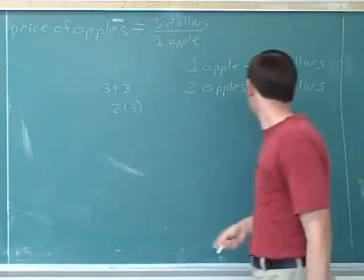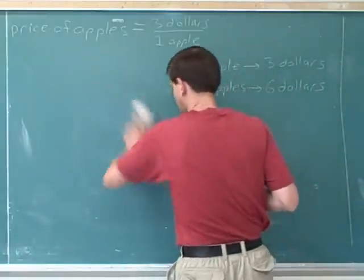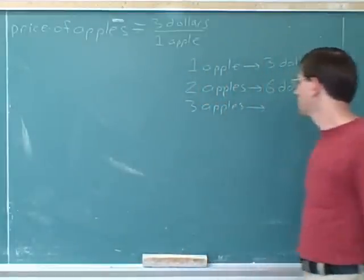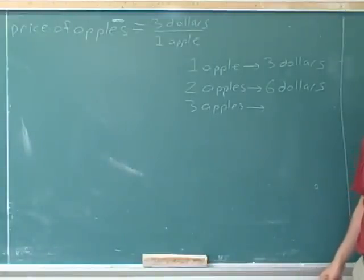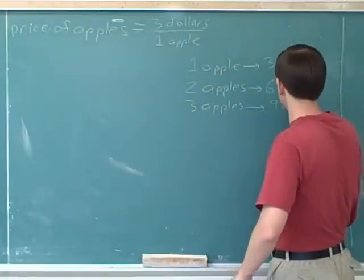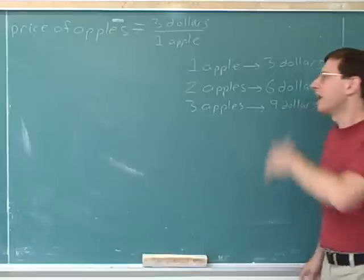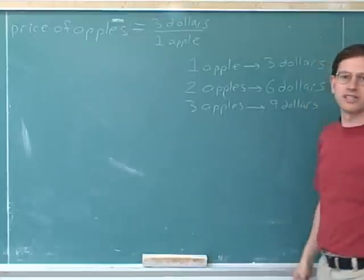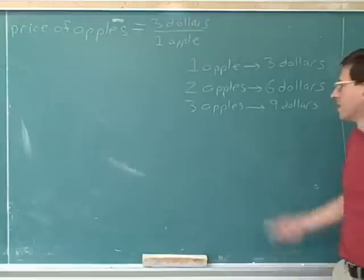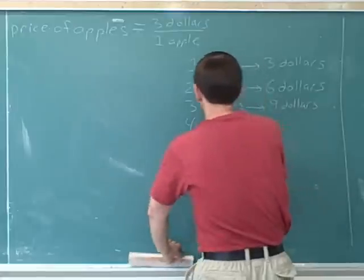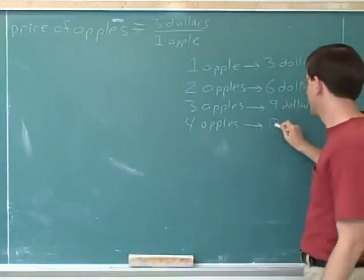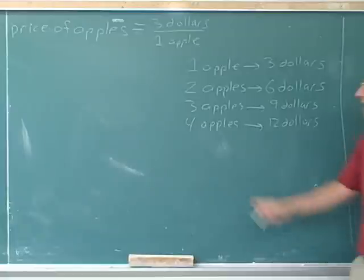Or let's say you decide to buy three apples — how much would that cost? We know two apples would cost six dollars, and one more apple is another three dollars, so that would be nine dollars total. Or you could use multiplication: since each apple costs three dollars and you're buying three of them, three times three is nine. Let's say you decided to buy four apples — well, that would cost another three dollars, so that would be twelve dollars total. Or you could just say four times three is twelve.